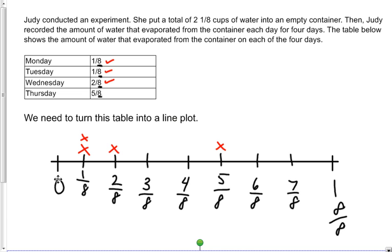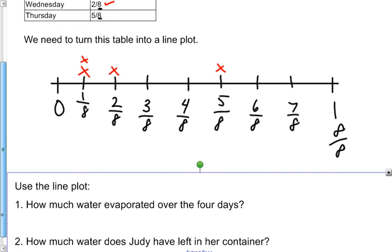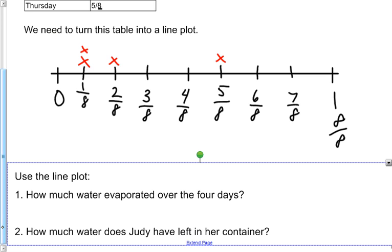So, now I can see in a different way how much it evaporated over the course of four days. So, now we're going to use this line plot to help us answer these questions. How much water evaporated over the four days? So, thinking about word problems, I need four numbers because it needs to be over four days. And because it's over that time, I'm going to be adding.